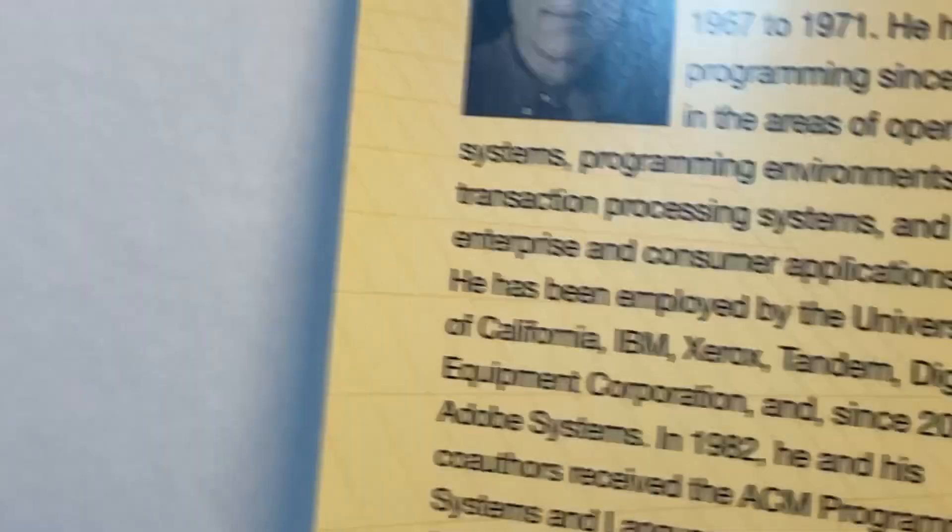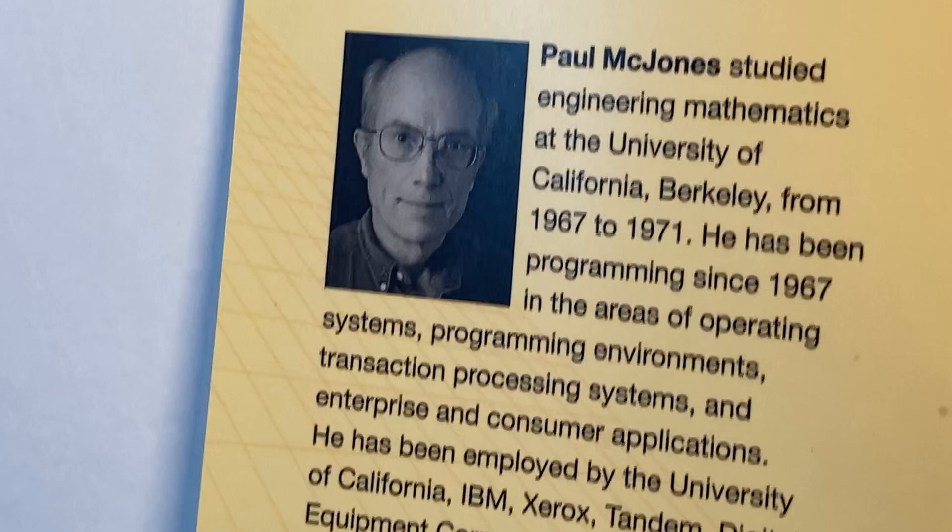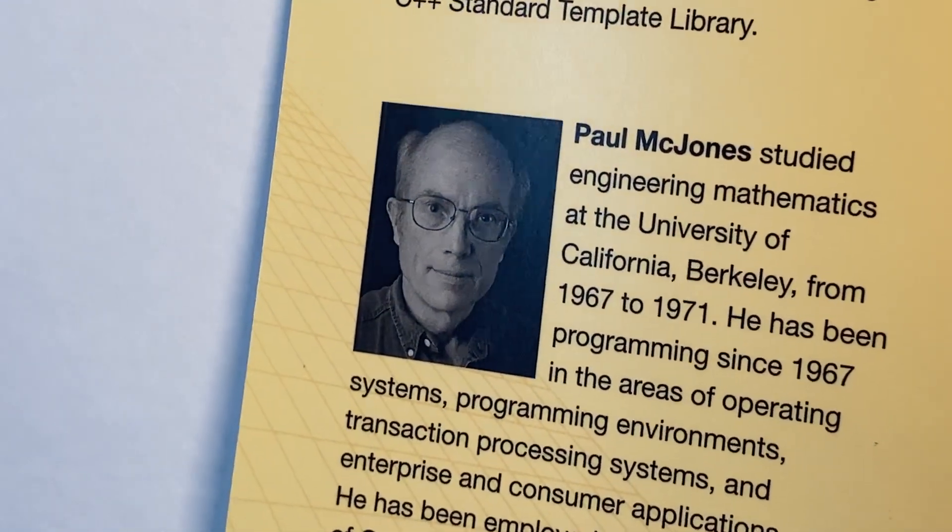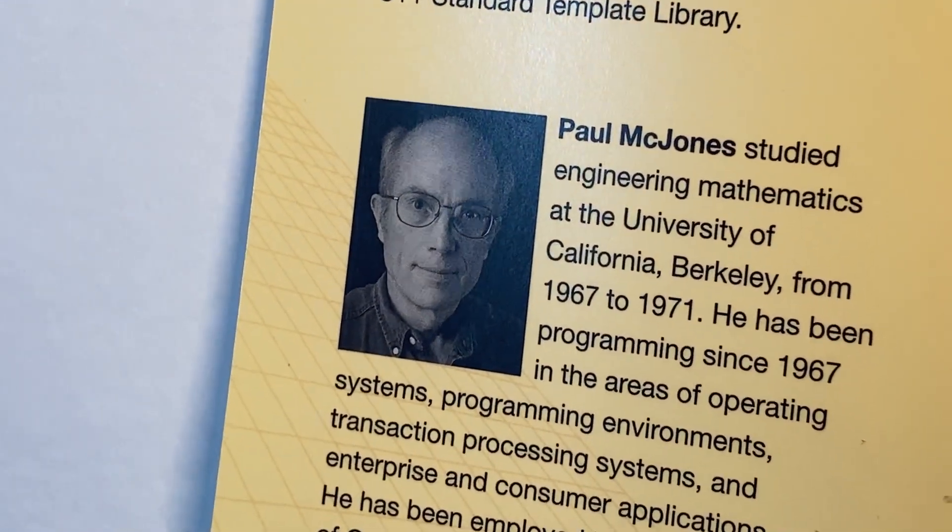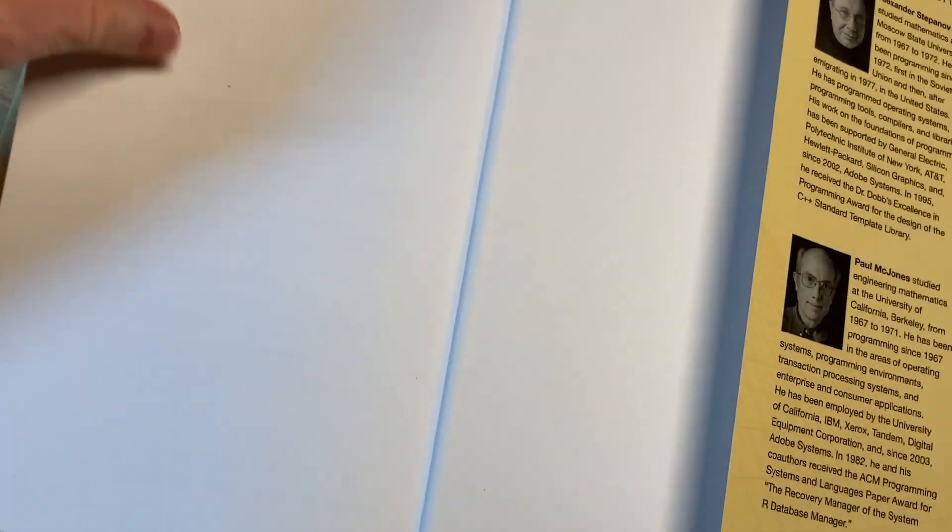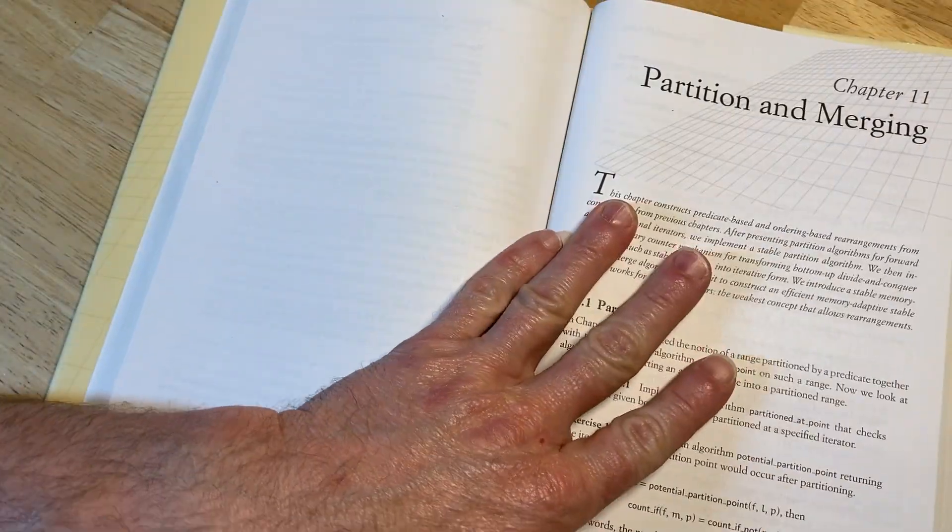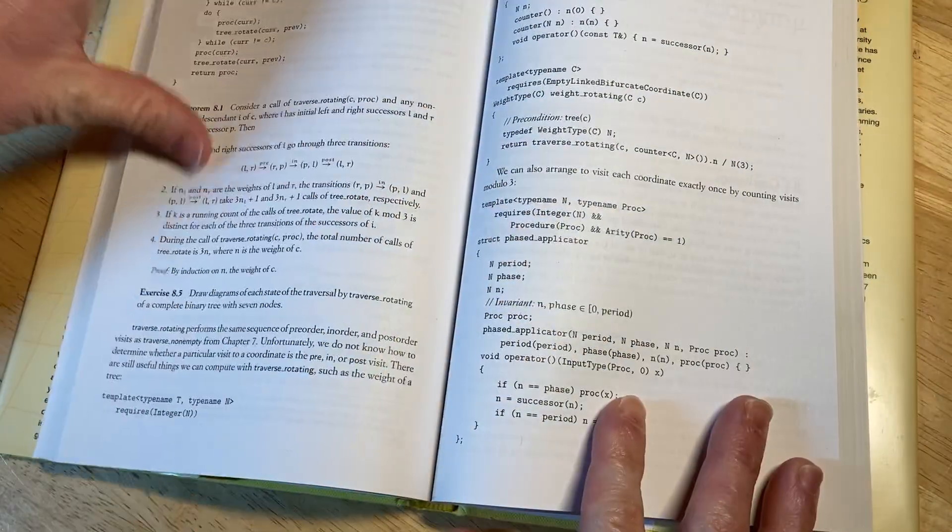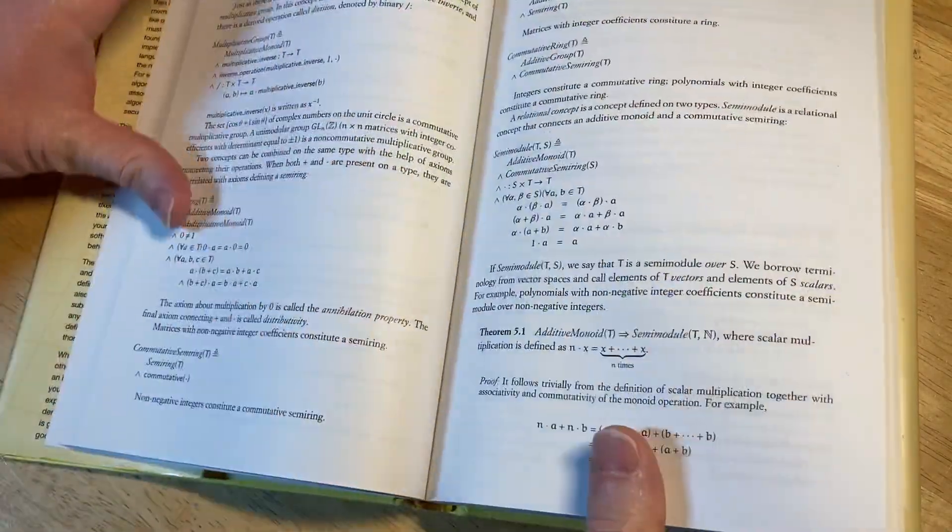And then Paul McJones studied engineering at Berkeley from '67 to '71. He's been programming since 1967. Wow, it's a long time.